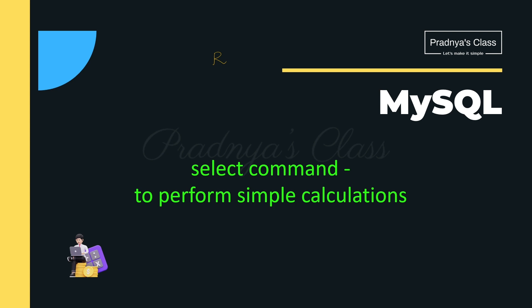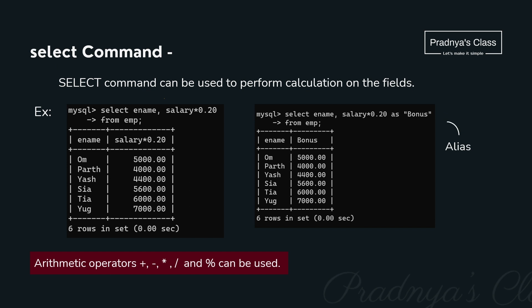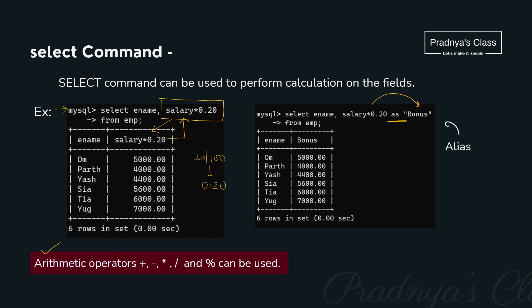We studied many operators usable with SELECT: relational, logical, BETWEEN/NOT BETWEEN, IN/NOT IN, and LIKE for pattern matching. Now, simple calculations can also be performed with SELECT using arithmetic operators. For example, providing a 20% bonus on salary: salary * 0.20. The column header displays the expression as written, but you can rename it meaningfully using the AS keyword.